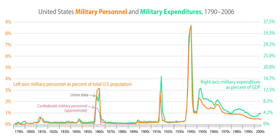As of 2017, the U.S. Armed Forces consists of the Army, Marine Corps, Navy and Air Force, all under the command of the United States Department of Defense. There also is the United States Coast Guard, which is controlled by the Department of Homeland Security. The President of the United States is the Commander-in-Chief, and exercises the authority through the Secretary of Defense and the Chairman of the Joint Chiefs of Staff, which supervises combat operations.